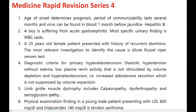A boy suffering from acute pyelonephritis: the most specific urinary finding is WBC casts. A 25-year-old female with history of recurrent abortions: the most relevant investigation to identify the cause is the dilute Russell viper venom test.